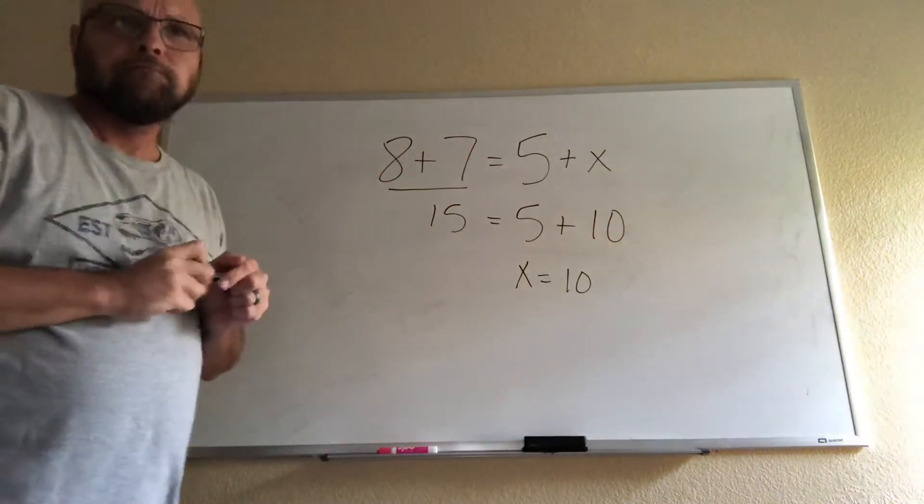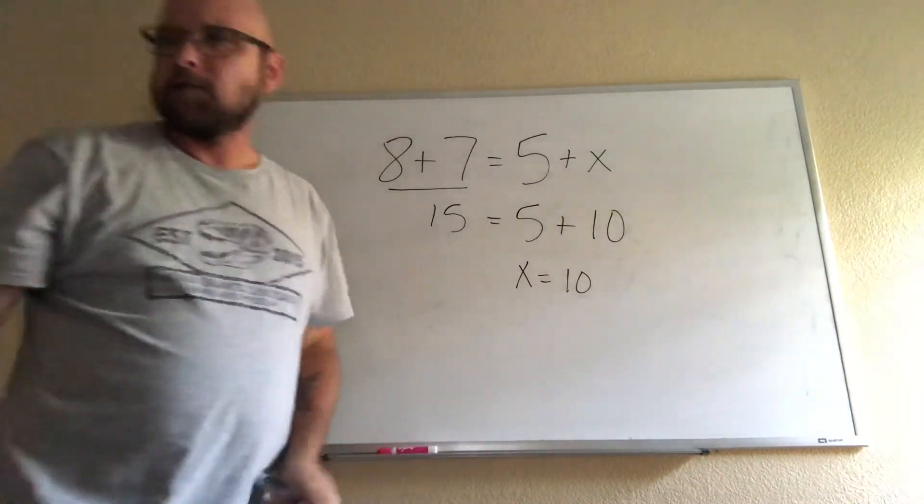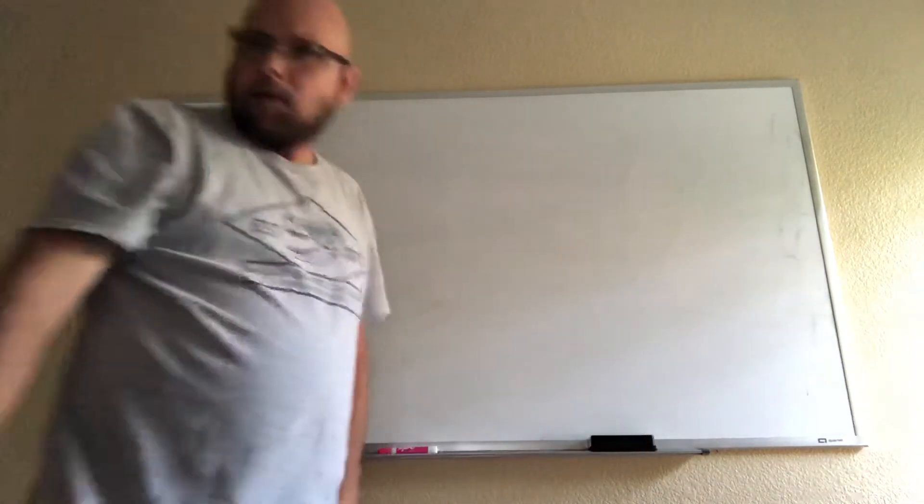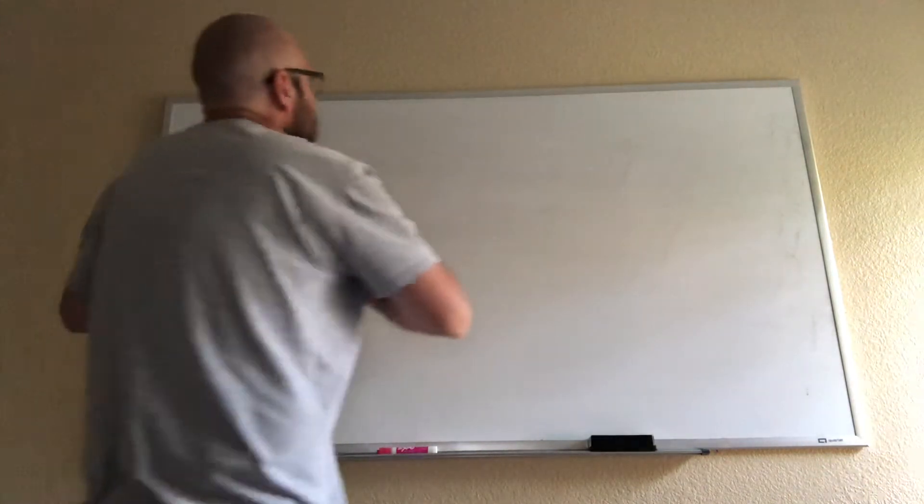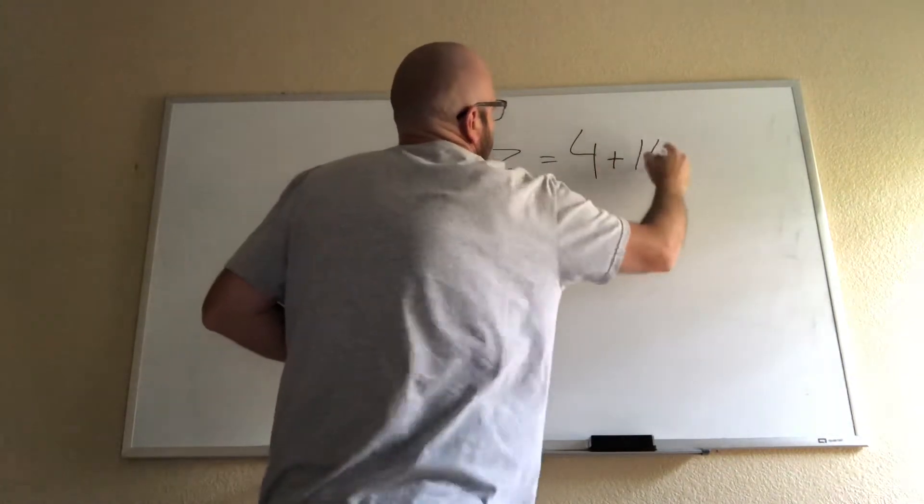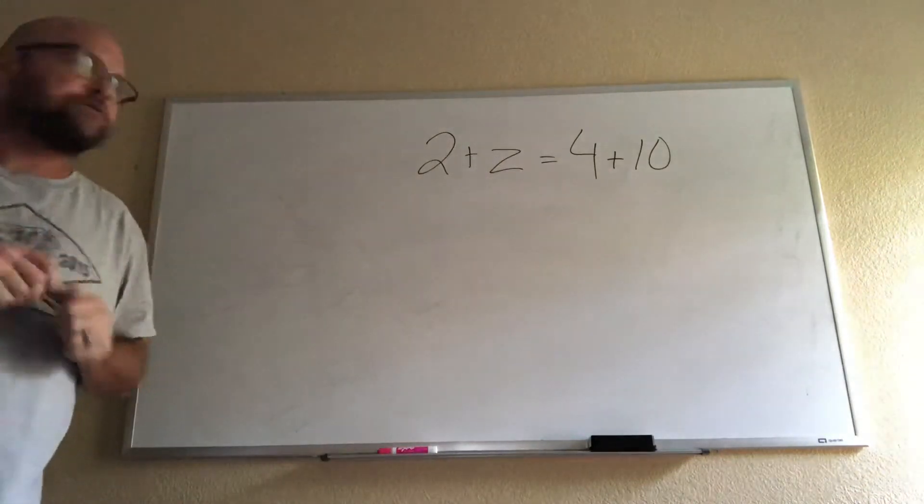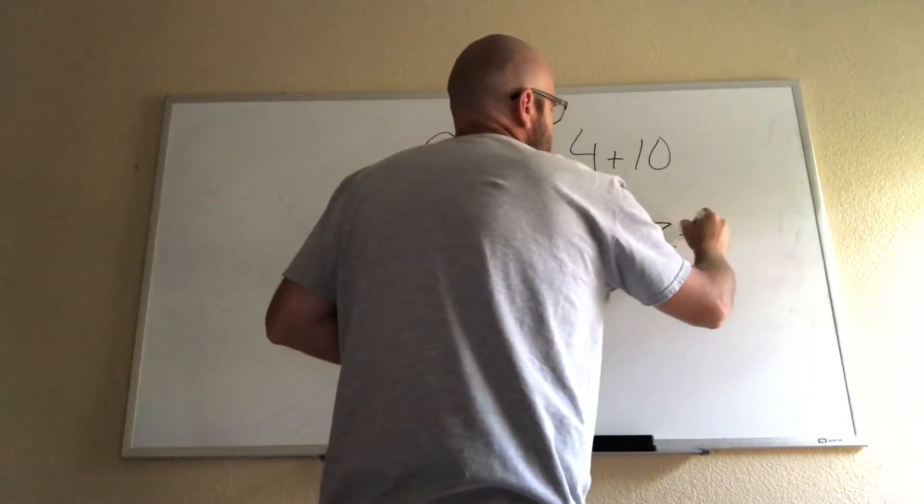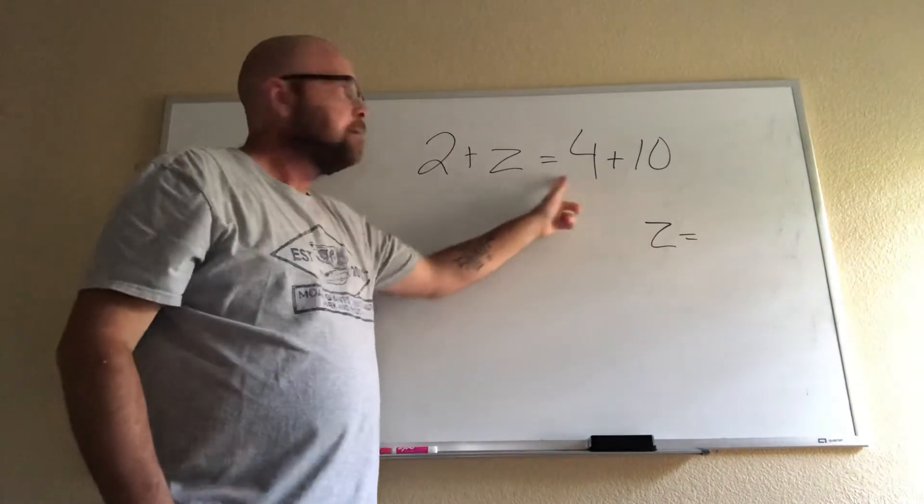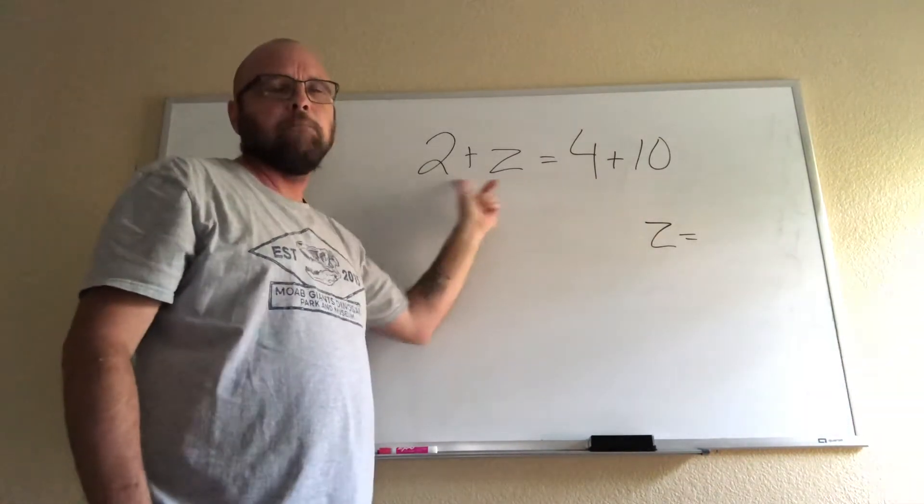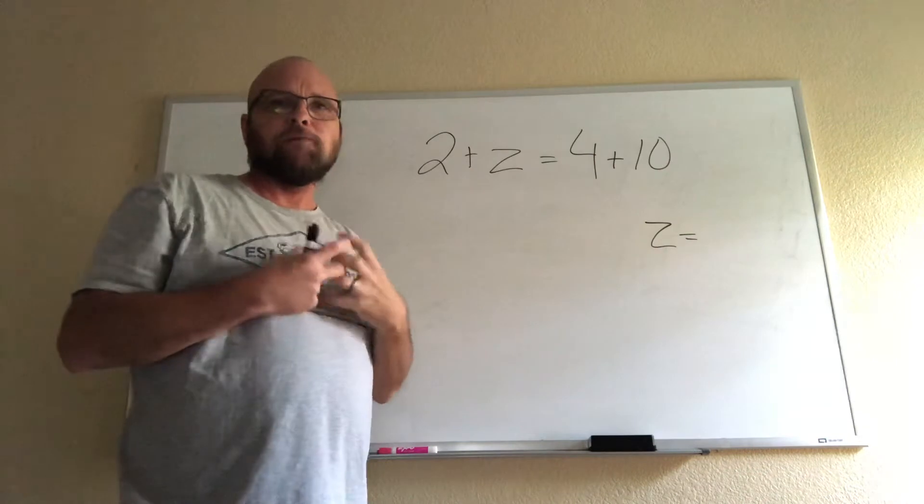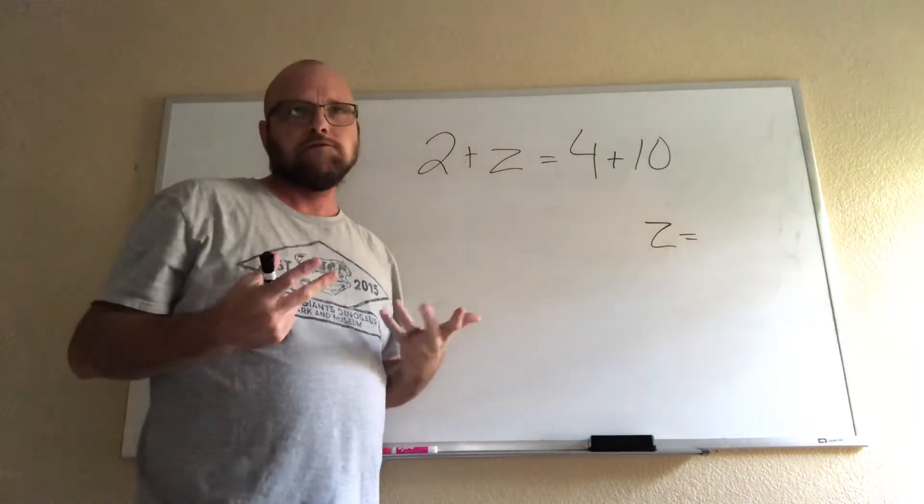The second one is 2 + Z = 4 + 10 and what we are asked to do here is solve for Z. Z equals and now we have to find the answer for Z. The same thing: the equal sign means both of these have to be together or both of these have to have the same answer. Z is just something we're picking to stand for a number. What number does Z equal to make this equal sign so that both sides are the same?